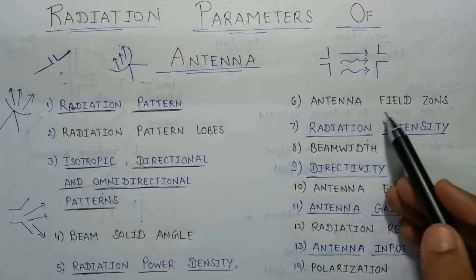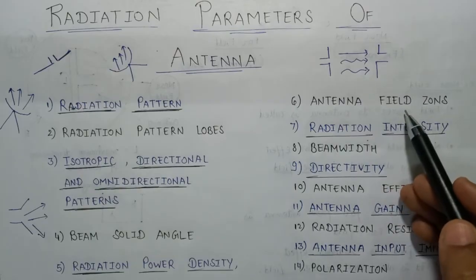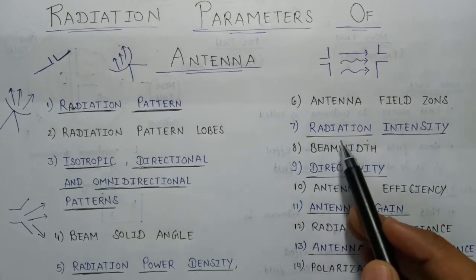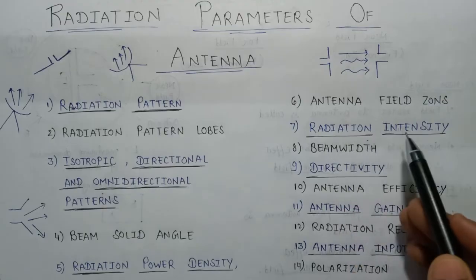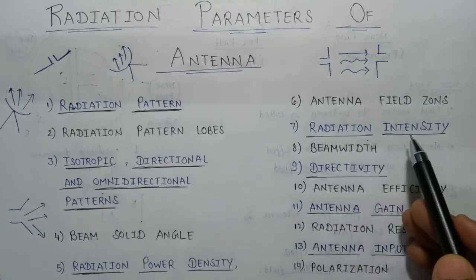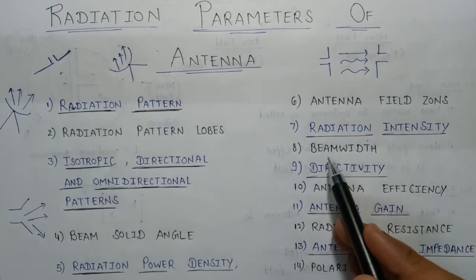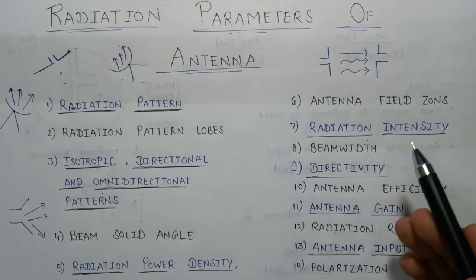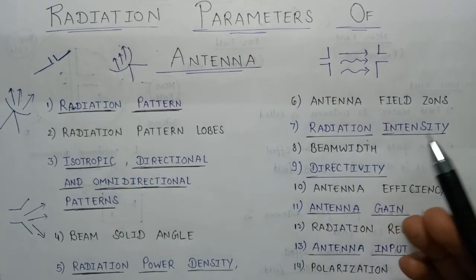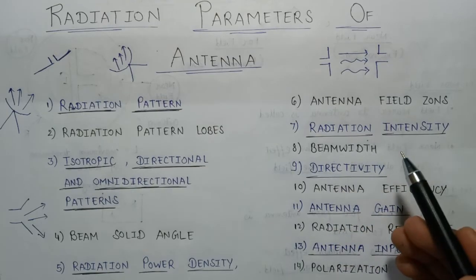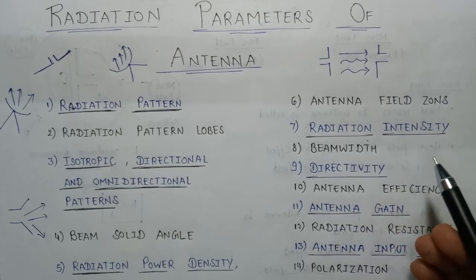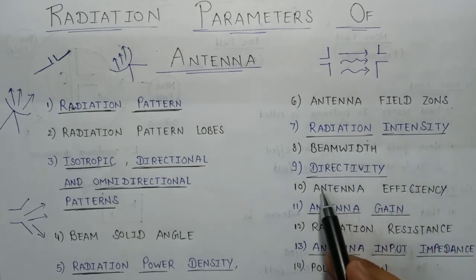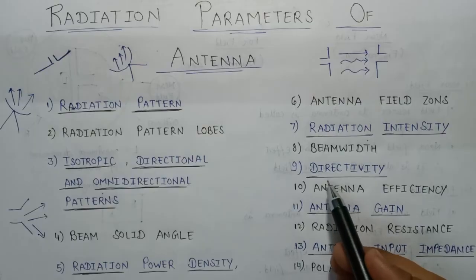In the seventh lecture we will talk about radiation intensity. In the eighth lecture we will talk about beam width. There are two types of beam width: half power beam width and first null beam width.